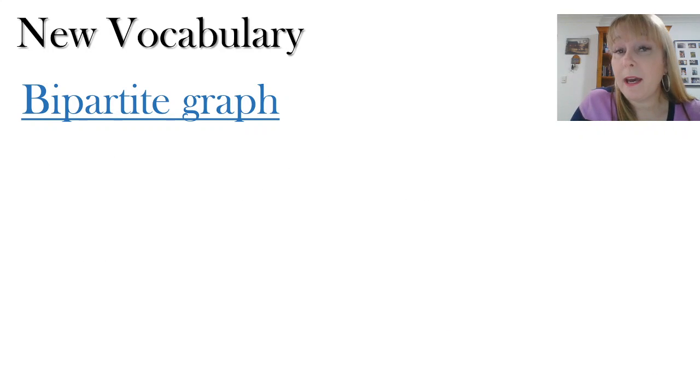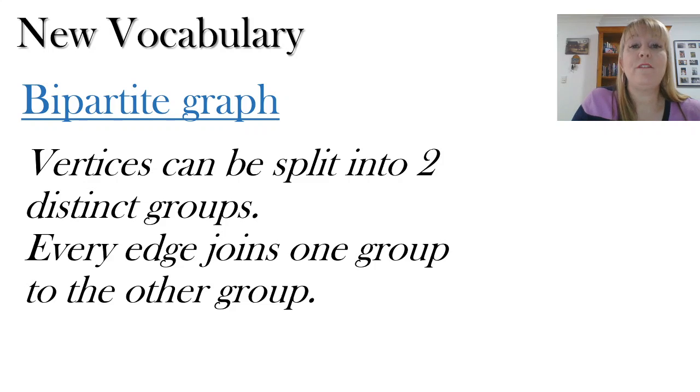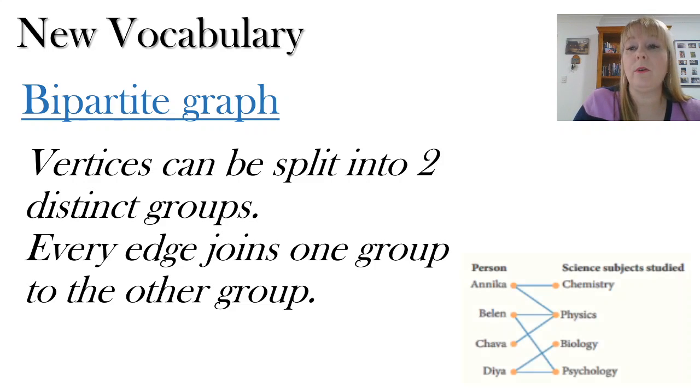And we also have something called a bipartite graph. This is where the vertices can be split into two distinct groups. And every edge joins one group to the other group. So in this example, we have some people on the left hand side and some subjects that they study in science on the right hand side. And it looks like most of these students, with the exception of Chava, are all studying two different sciences. Now you'll notice that there's no subject studying a subject or a person studying a person. The connections are purely from left to right.